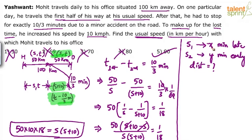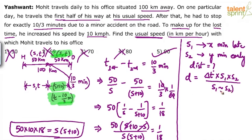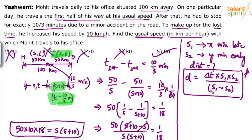When traveling at s1 he reaches x minutes late, at s2 he reaches y minutes early. The shortcut formula gives: D = Δt × s1 × s2 / (s1 − s2), where Δt is the total time difference (x + y minutes), and s1, s2 are the two speeds. You can refer to the time and distance video for the full derivation. This same formula can be applied to the current problem.